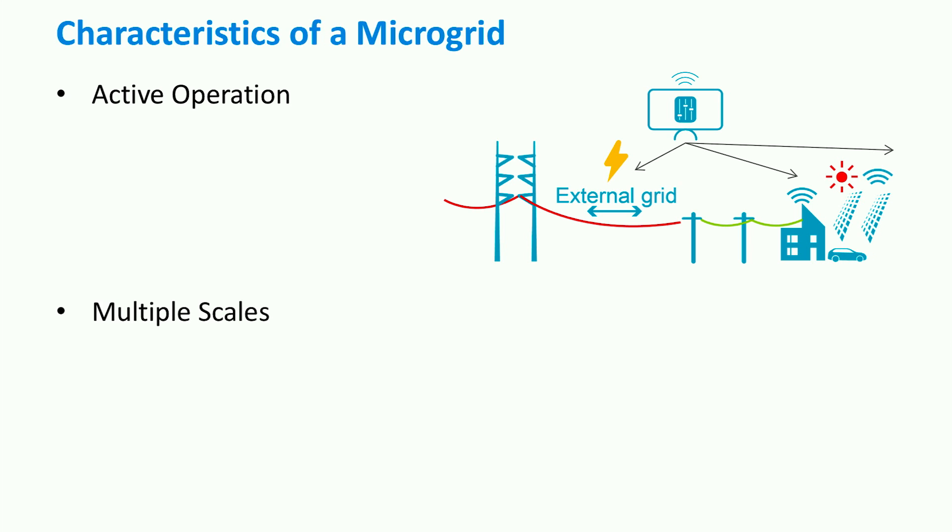Fourth, microgrids may operate in multiple scales. A low scale microgrid could typically be a house with PV panels, power converters and loads.